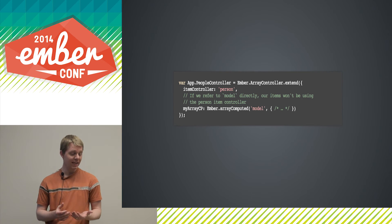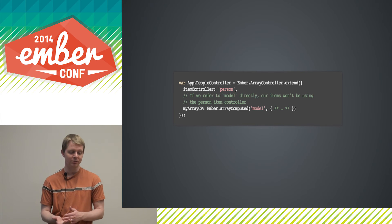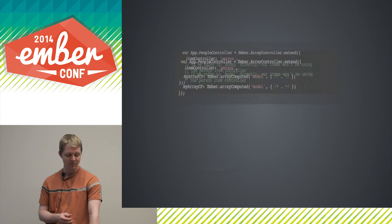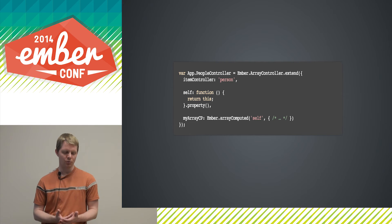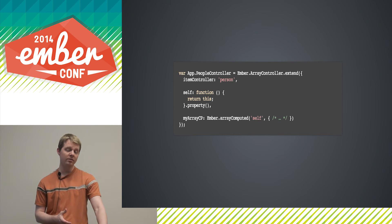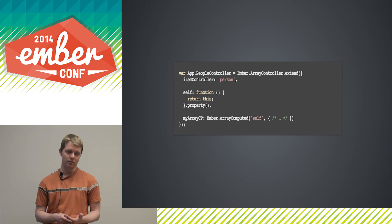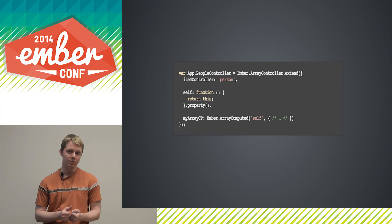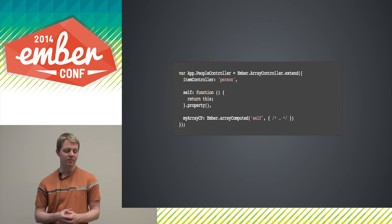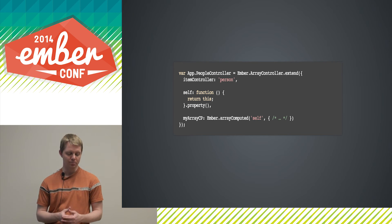Conceptually, what you want is a property that just returns the array controller itself. This actually works completely. What'll happen is the array computed will grab the self property as the array, treat it like an array, and that's what it'll be getting objects from — that's how you wind up with the proxies.